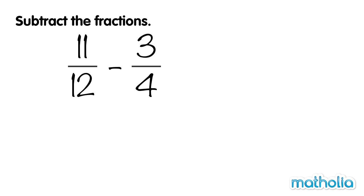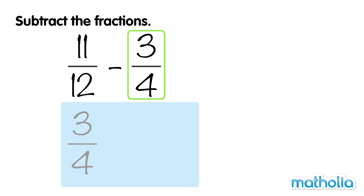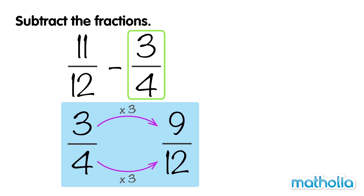Let's find 11 twelfths minus 3 quarters. The denominators of these fractions are not the same. To subtract the fractions, we must first make the denominators the same. If we multiply the numerator and the denominator of 3 quarters by 3, we get 9 twelfths. 3 quarters and 9 twelfths are equivalent fractions.